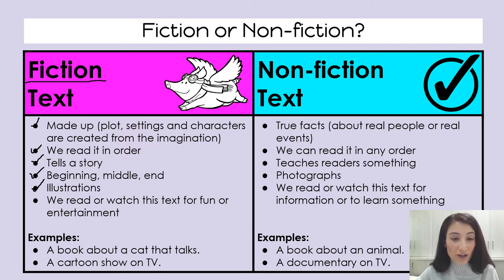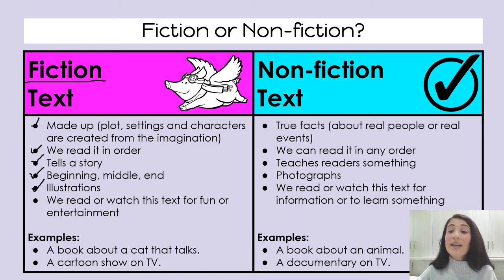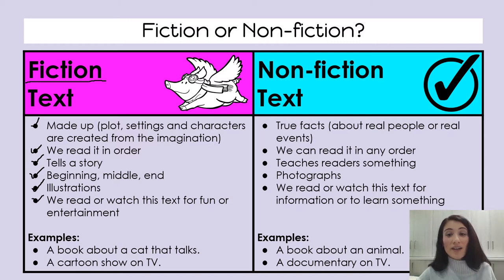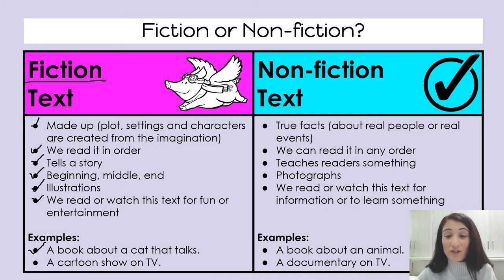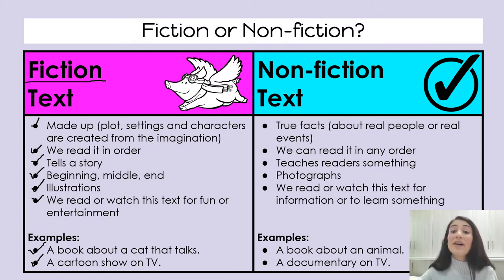A fiction text might have illustrations, which are drawings that someone has done to show what's happening in the book. We might read or watch this text for fun or entertainment — we read it to laugh, to have fun, because it's funny or because it makes us feel good. Some examples of fiction text might be a book about a cat that talks, or a cartoon show on TV about a made up story.